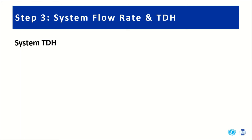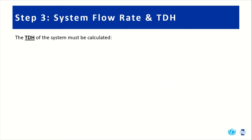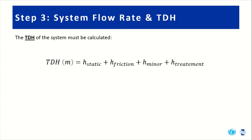Now that we've got our system flow rate, we're ready to calculate our system TDH. It's important to see the overall layout of our system: the bottom of the borehole, the pump, the dynamic water level, a well cap, then piping through treatment equipment and all the way up to the top of the water tank. The table shows the elevations of these various system components.